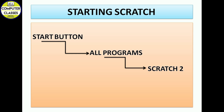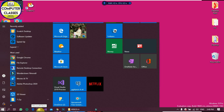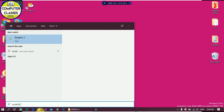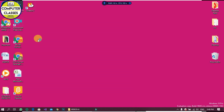Now, how do you start Scratch? To start Scratch, press the Windows button or Start button, go to All Programs, and find Scratch — click on it and the Scratch interface will open. If you have Windows 10, just press the Windows button, type Scratch, and click on it.